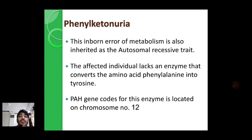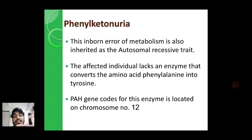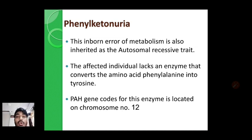The next Mendelian disorder is phenylketonuria. Phenylketonuria is also an autosome-linked recessive disease, involving the recessive allele present on autosomes. In phenylketonuria, the affected individual is not able to synthesize a specific enzyme known as phenylalanine hydroxylase, which converts phenylalanine into tyrosine. This defect occurs due to a defect in the PAH gene, which codes for phenylalanine hydroxylase and is present on chromosome number 12.